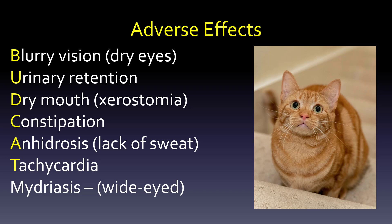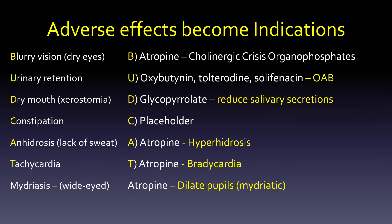So why are we starting with adverse effects instead of indications? You're going to hear all the time that a drug has anticholinergic properties — watch out for that. In the elderly, something like diphenhydramine or Benadryl you don't want to use because it causes sedation but also has anticholinergic effects, causing many of these problems. Now we go from adverse effects to indications — how do you take a bad thing and make it good? Blurry vision or dry eyes is one of the things that happens in cholinergic crisis from an organophosphate like pesticides, and atropine is the antidote.